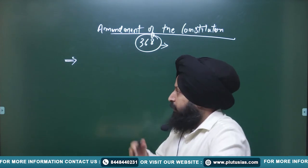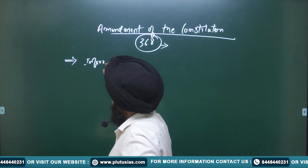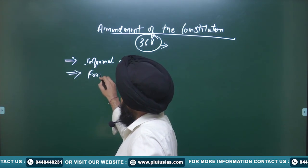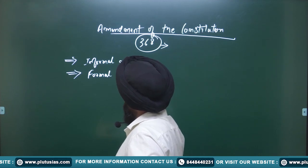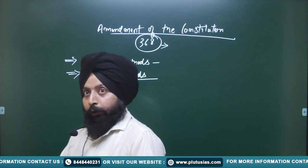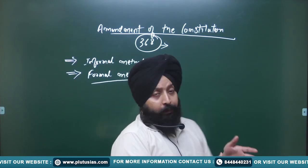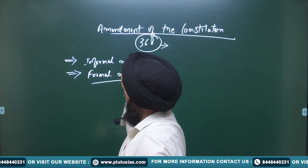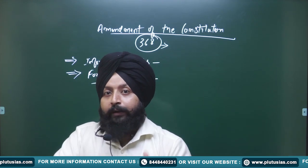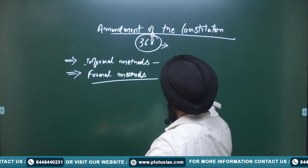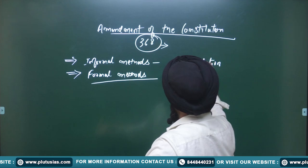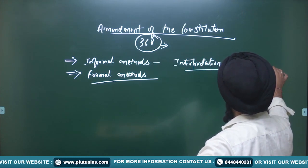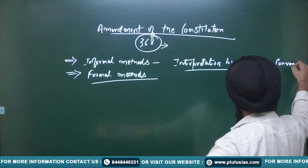There are different modes of amendment of the constitution. Certain modes are called informal methods and certain methods are called formal methods. Informal methods include amendment done either by the courts through interpretation, or through adoption of conventions and usages.